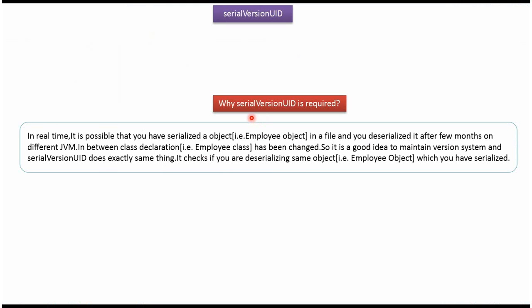Why is SerialVersionUID required? In real time, it is possible that you have serialized an object to a file and you deserialize it after a few months on a different JVM. In between, the class declaration may have changed. So it is a good idea to maintain a version system, and SerialVersionUID does exactly that. It checks if you are deserializing the same object which you serialized. And that is about SerialVersionUID. Thanks for watching.